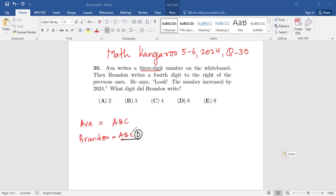And now what is the relationship between them? The number increased by 2024. So what does that mean? That ABC plus 2024 is equal to ABCD. Or what we can say, that ABCD minus ABC is 2024. So the difference between these numbers is 2024.